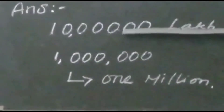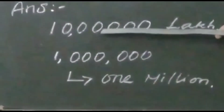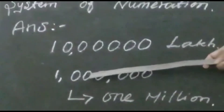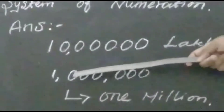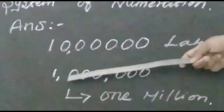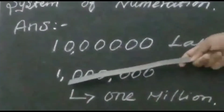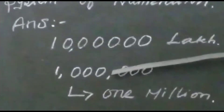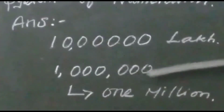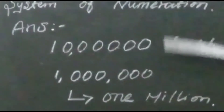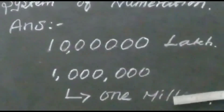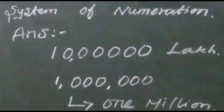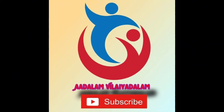So: 1, 10, 100 — insert a comma here. Next: 1000, 10,000, 100,000 — insert a comma after 100,000. So the answer is 1,000,000. The number of employees in the Indian railway system is 1,000,000.